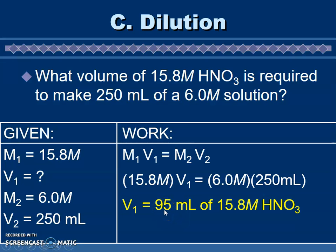So we multiply 6 times 250 and then to get that V1 by itself we need to divide by 15.8. When we do that, we see that we have a capital M over here, we're dividing by a capital M, so both of those cancel off and we are left with milliliters. Our answer, our question asked for what volume, so milliliters is an appropriate unit to be left with if we are following our units. So we need 95 milliliters in order to create the solution we're trying to create.